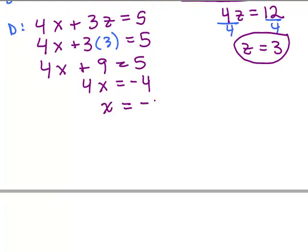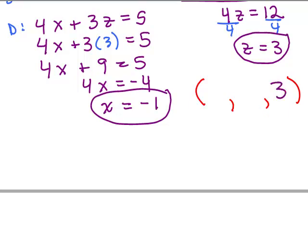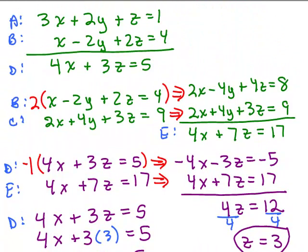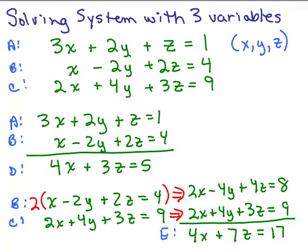I'm building my ordered triple (X, Y, Z). I know Z equals 3 and X equals negative 1. All that's left is to solve for Y. Now that I know X and Z, I go back to one of the original equations and pick one to figure out what Y is. I'll choose equation A — that looks like it has easy numbers.